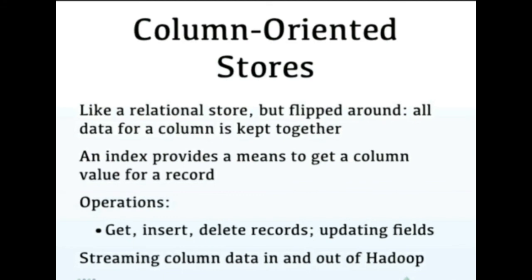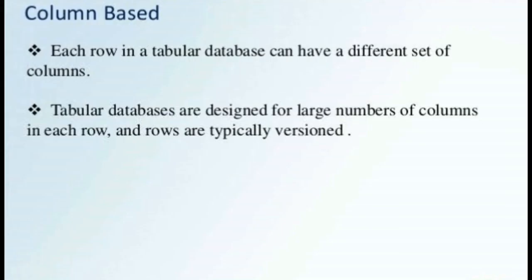The last type is Column-Oriented Stores. Column-oriented is like a relational database where a table is available, but all the data is added based on columns rather than rows. Instead of row-wise storage, we prefer column-wise storage to get, update, and delete data. Each row can have a different set of columns, and the row key maps to a large number of columns. We store and stream column data in this approach.